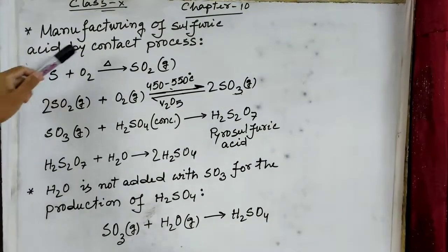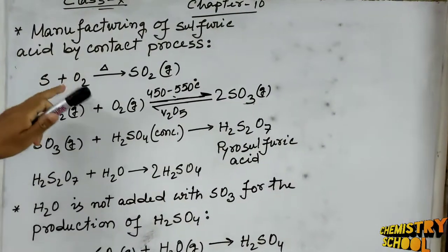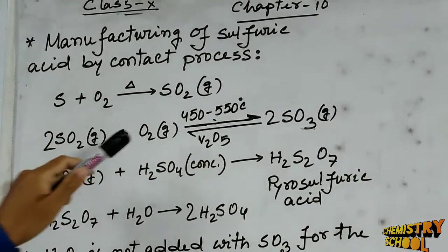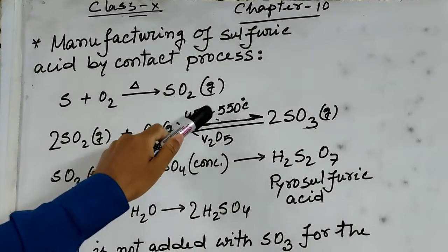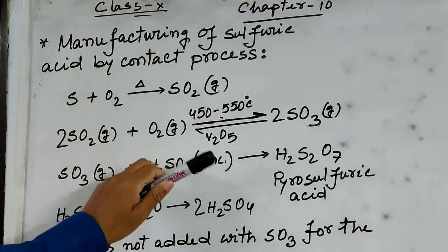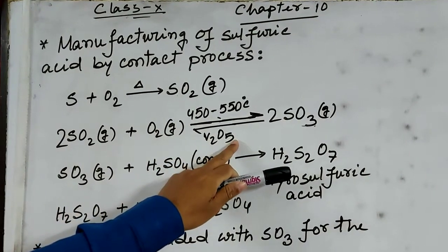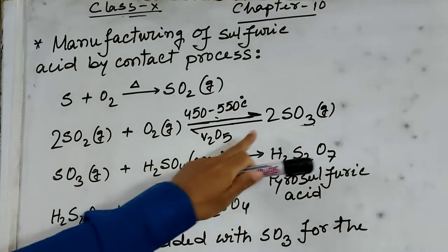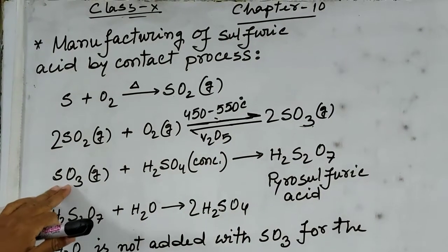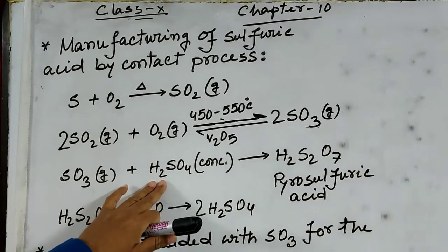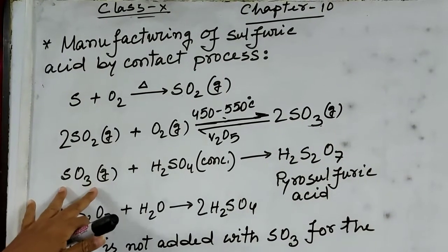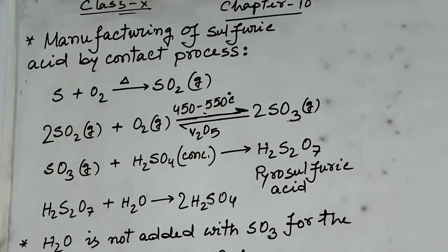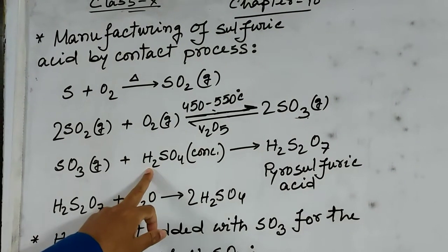Manufacturing of sulphuric acid by the contact process. Sulphur is heated with atmospheric oxygen to produce sulphur dioxide gas. Then, at 450 to 550 degrees centigrade and in the presence of vanadium pentoxide catalyst, sulphur dioxide gas is heated with atmospheric oxygen to produce sulphur trioxide. Then, sulphur trioxide is passed through concentrated sulphuric acid, where it is absorbed to produce pyrosulphuric acid.